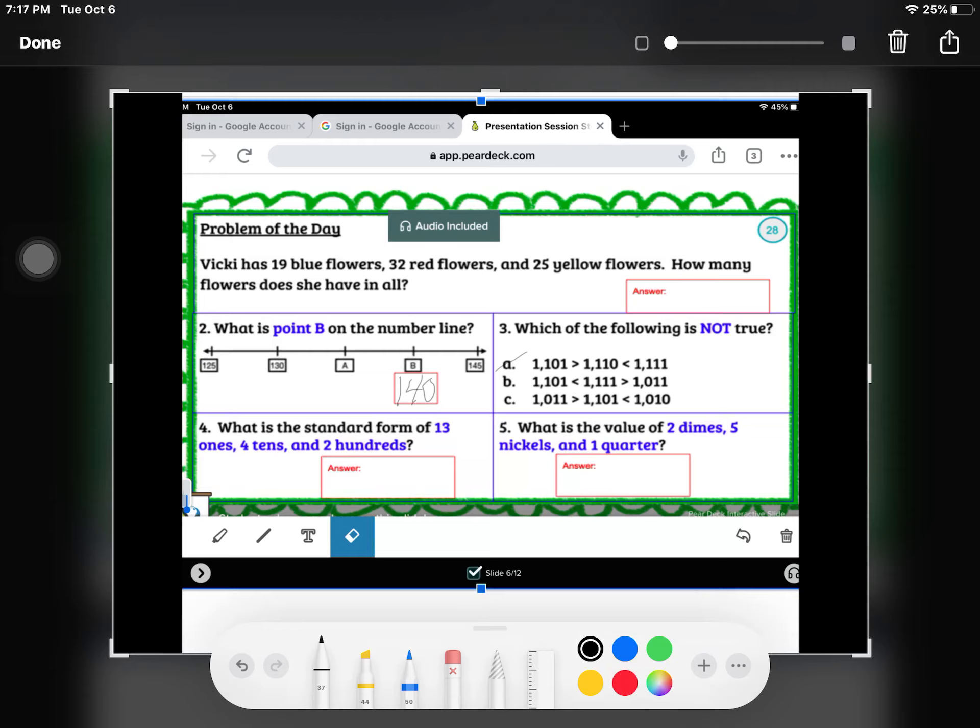And 1111 is greater than 1011, so that may be the correct answer. Let's look at C. C says 1011 is greater than 1101, which is not correct. So our answer choice is B.